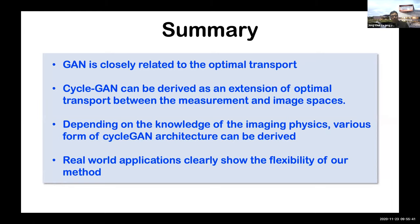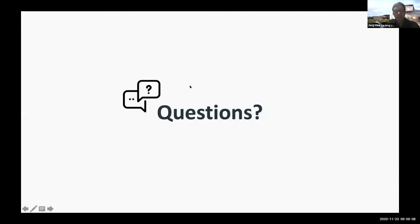In summary, we showed that GAN is closely related to the optimal transport problem, and CycleGAN was derived as an extension of optimal transport between the measurement and image space. Depending on the knowledge of imaging physics, various forms of CycleGAN architecture can be derived. We demonstrated real applications that clearly show the flexibility, stability, and accuracy of our method. Thank you very much for your attention.